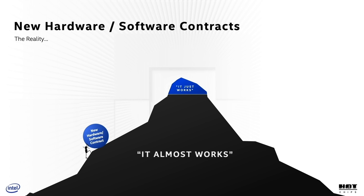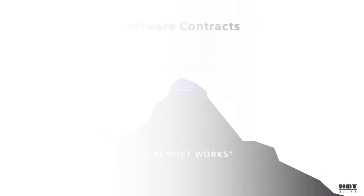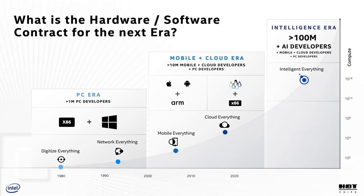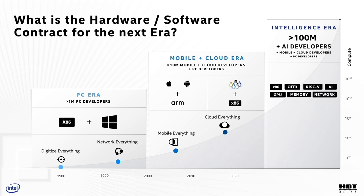This is a Sisyphean effort needed to establish new contracts at the bottom — a long journey pushing the rock up through the 'it almost works' part of the slope to the 'it just works' peak. The trillion-dollar question ahead of us all: what are the hardware-software contracts for the next era of computing — the intelligent everything era? An era likely to see an expansion of architectures: x86, ARM, RISC-V on the CPU front; GPUs; AI architectures; compute in memory; near-memory compute; and compute inside the network — a very heterogeneous mix.